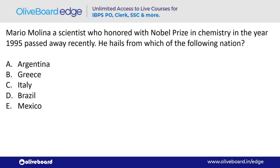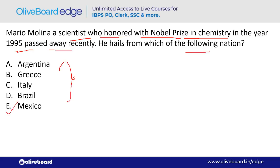Mario Molina, a scientist honored with the Nobel Prize in Chemistry in 1995, passed away recently. He was from which nation? The answer is Mexico — option E.